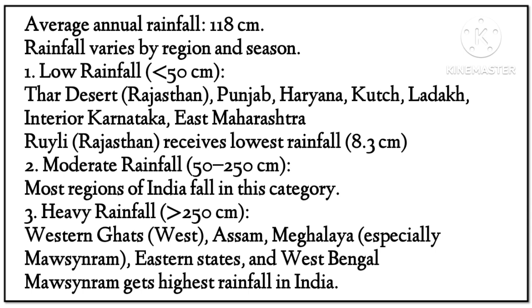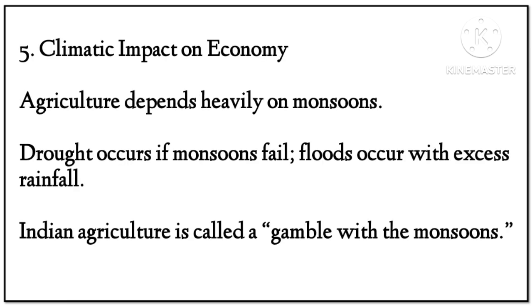Heavy rainfall (more than 250 cm) regions include the Western Ghats, Assam, Meghalaya — especially Mawsynram — eastern states, and West Bengal. Mawsynram receives the highest rainfall in India.